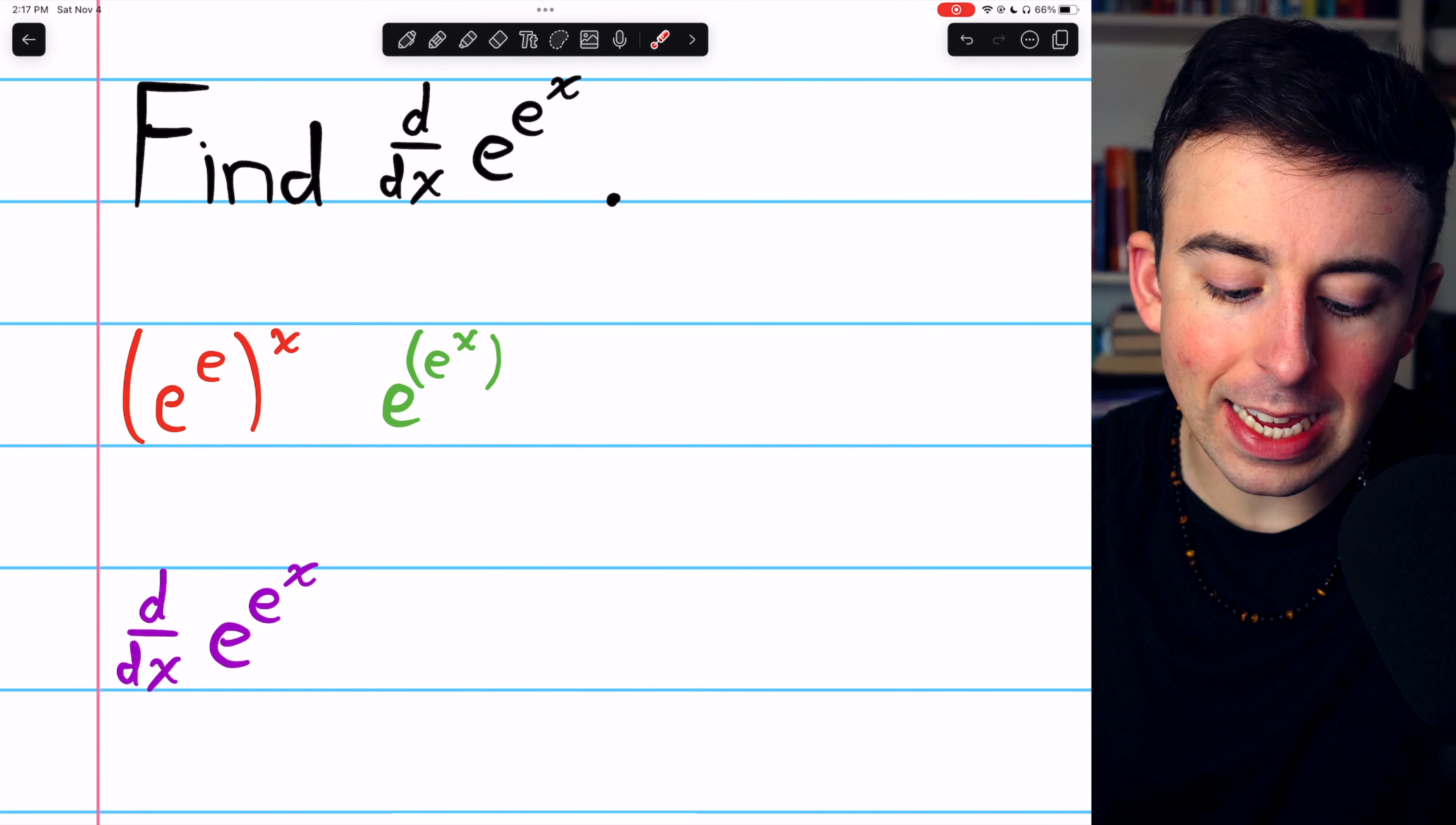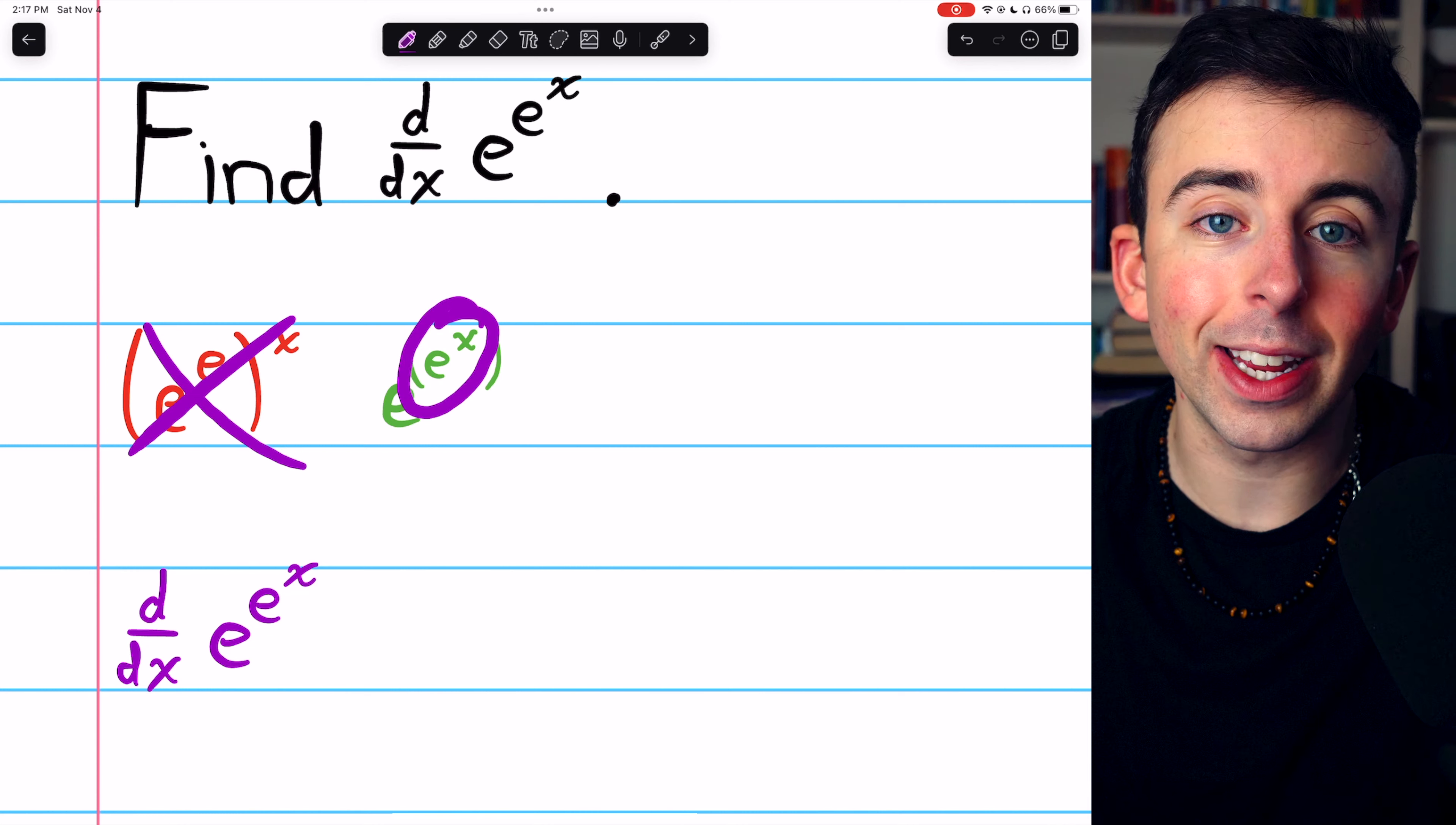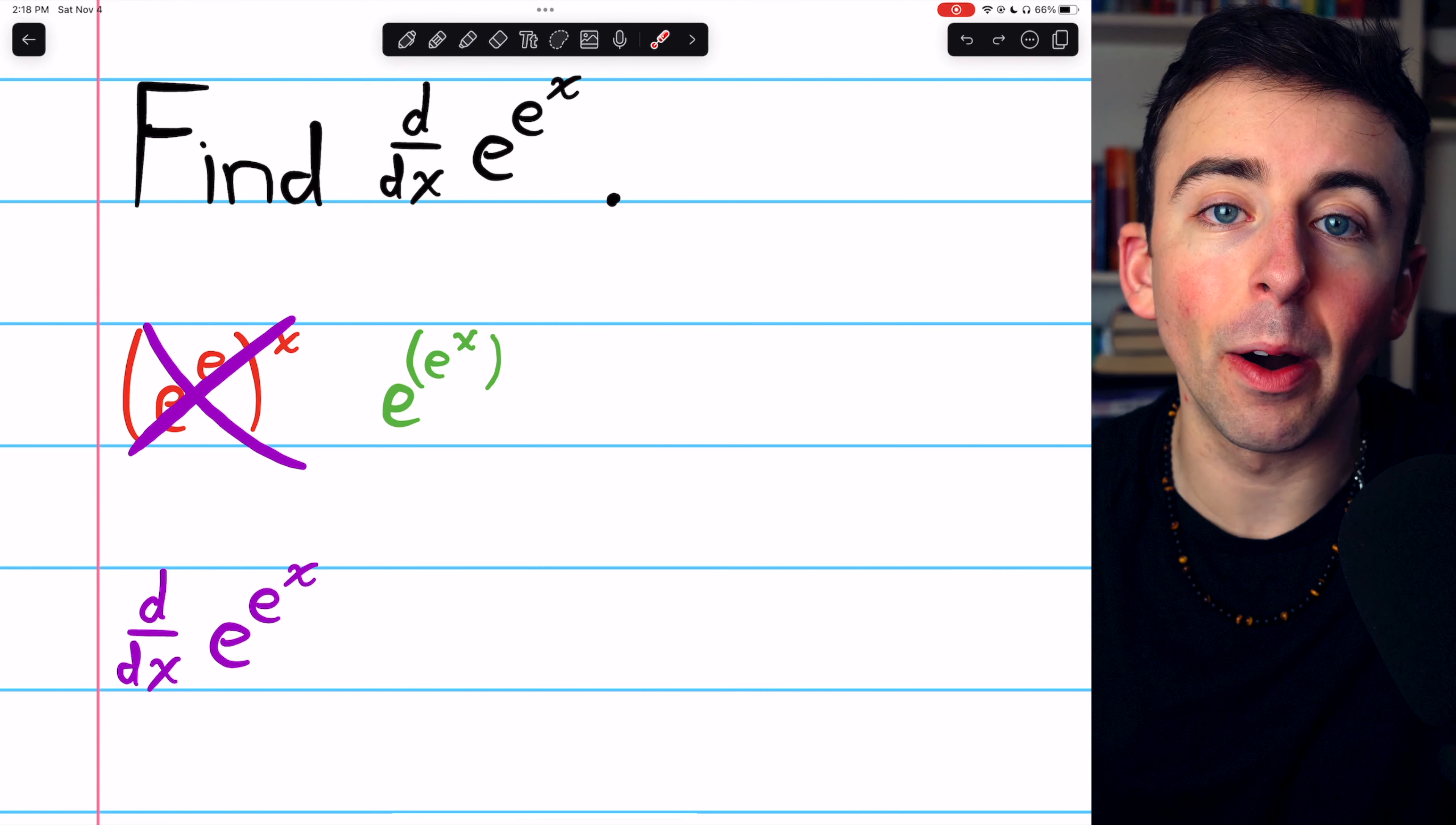We're not talking about e to the power of e, all to the power of x. By the order of operations, the exponents need to get evaluated first. So what we are talking about is e to the power of the quantity e to the power of x.